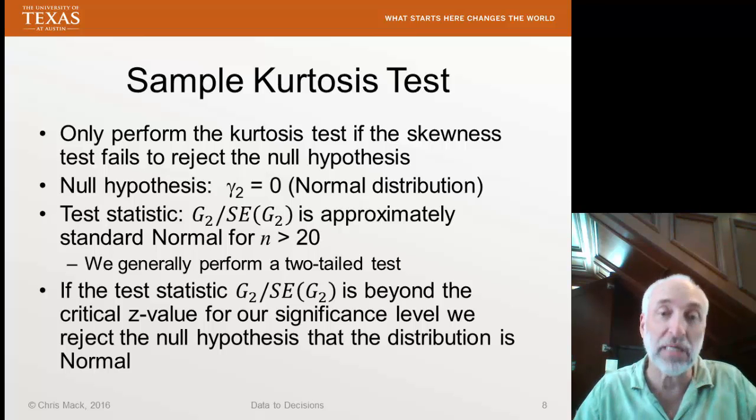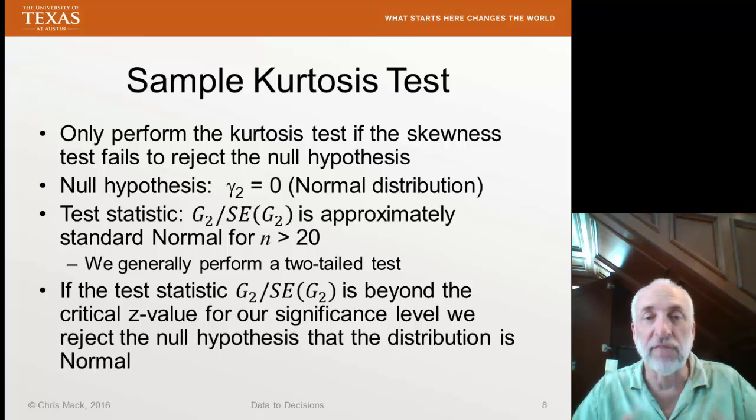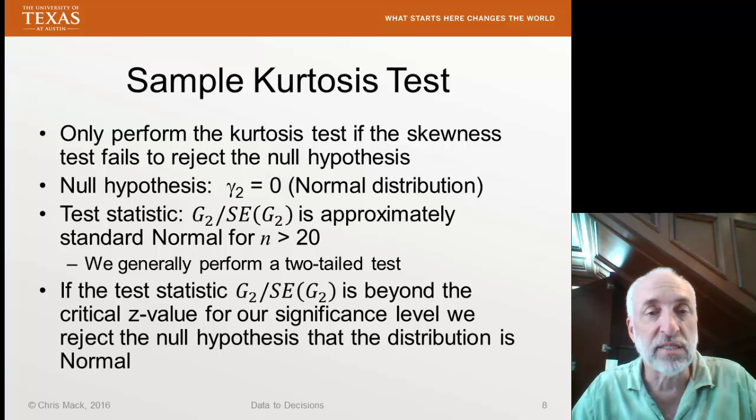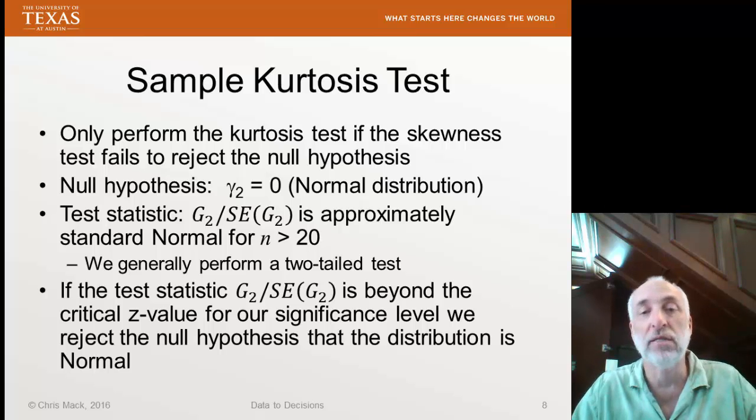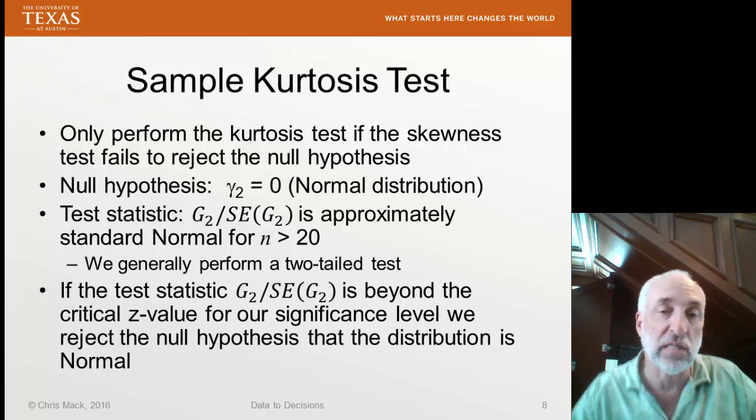So we compare the test statistic, G2 over the standard error of G2, to a critical z-value for the given significance level. Recall that if our significance level is 0.05, it's a z-value of about 1.96. About two sigma away from the mean is a 95% confidence interval. If the test statistic is larger than 1.96, then we can reject the null hypothesis.